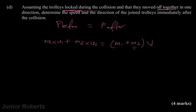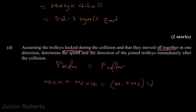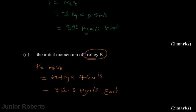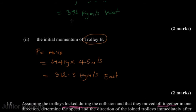In our case, m1 is the mass of Trolley A, u1 is the velocity of Trolley A, m2 is the mass of Trolley B, and u2 is the initial velocity of Trolley B. We already calculated the momentum of Trolley A and B before the collision, so we'll use those as our initial momenta.